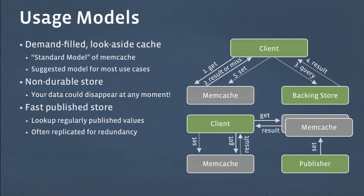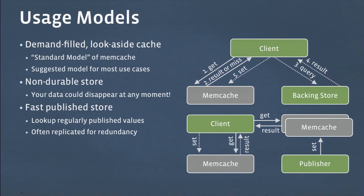We also see Memcached used as a non-durable store, where the data that is set to it could disappear any time, and the users are OK with that. We also see it used as a fast-published store. In this use case, there's a publisher which is continuously setting data from some stream into Memcached — sometimes a replicated set of Memcached boxes in case there's a failure — and then the client will be reading that data out with always fast, uniform, low latency.